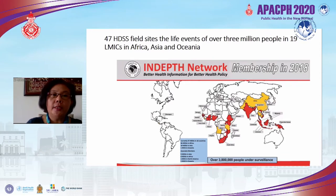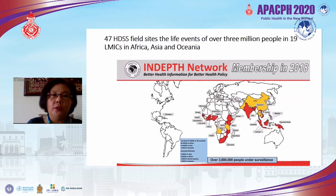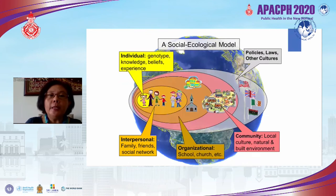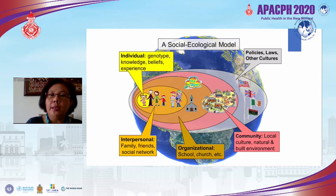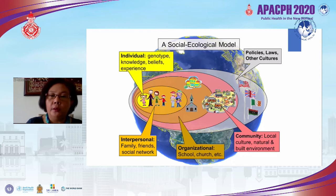How many HDSS are there in the world? Altogether 47 HDSS cover over three million people in 19 low and middle income countries across Africa, Asia, and Oceania. SICO is one of them. Generally, HDSS is based on a socio-ecological model where health is shaped by individual, interpersonal, community, organizational, policy, legal, and cultural factors — and HDSS has the potential to cover all determinants within this model.